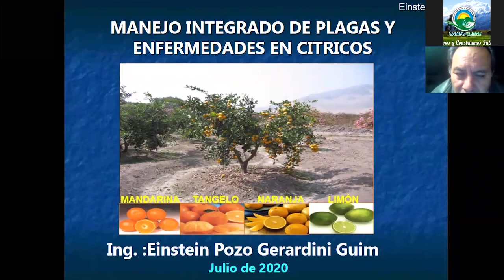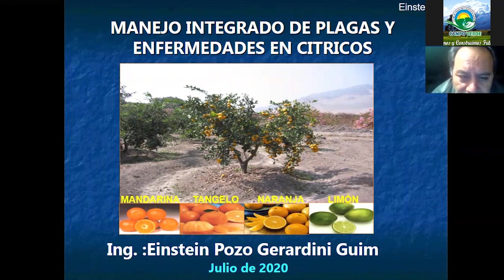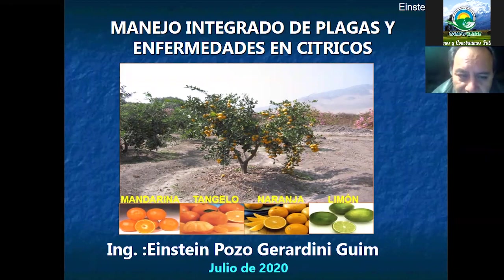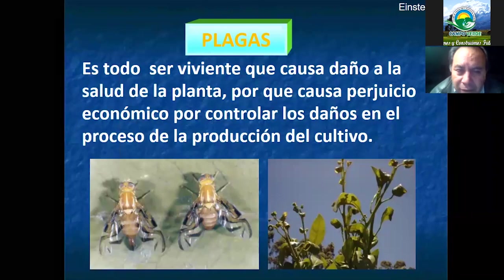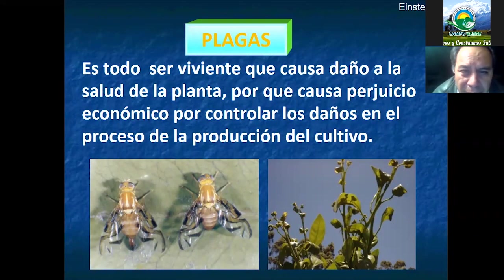Buenas tardes, continuando con el segundo tema sobre manejo integrado de plagas y enfermedades en el cultivo de cítricos. En cítricos tenemos diferentes especies como la mandarina, el tangelo, la naranja y los limones. Como entendemos las plagas para el cultivo, es todo ser viviente que causa daño a la salud de la planta.